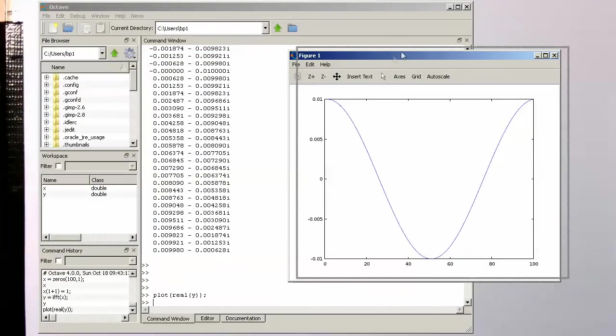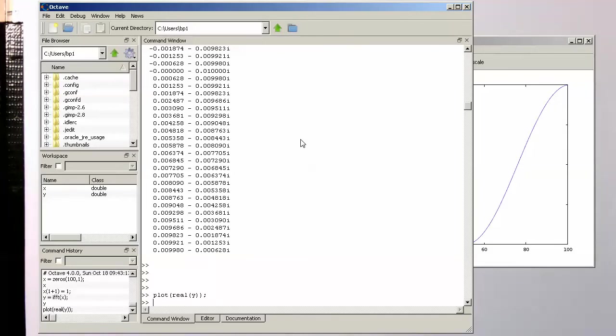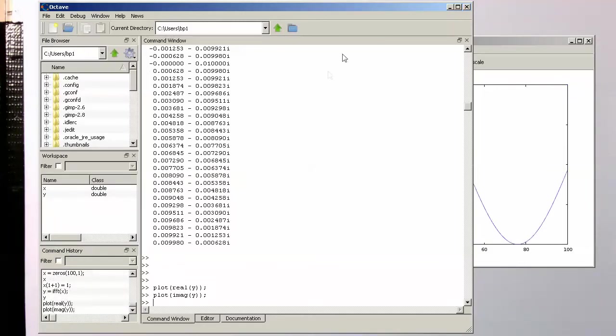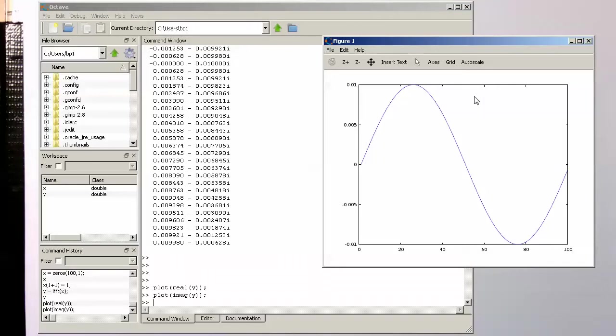that we are getting here in the real part a beautiful cosine wave. And let's have a look at the imaginary part. And in the imaginary part we are getting a beautiful sine wave out there, which is what we expect.